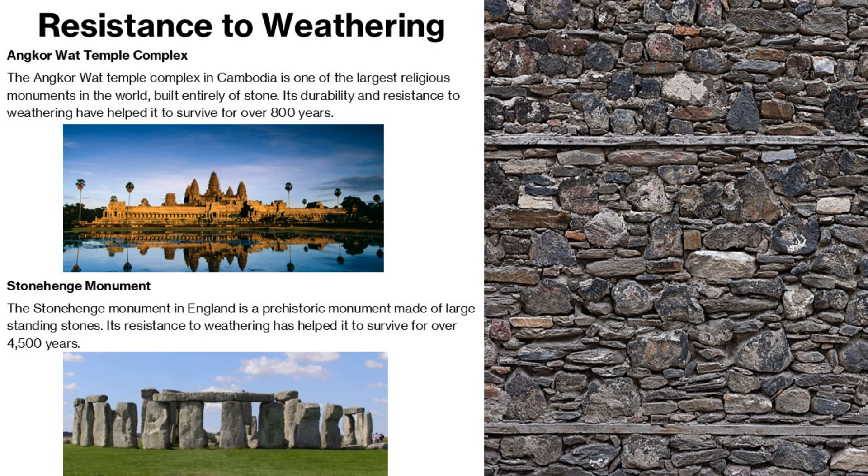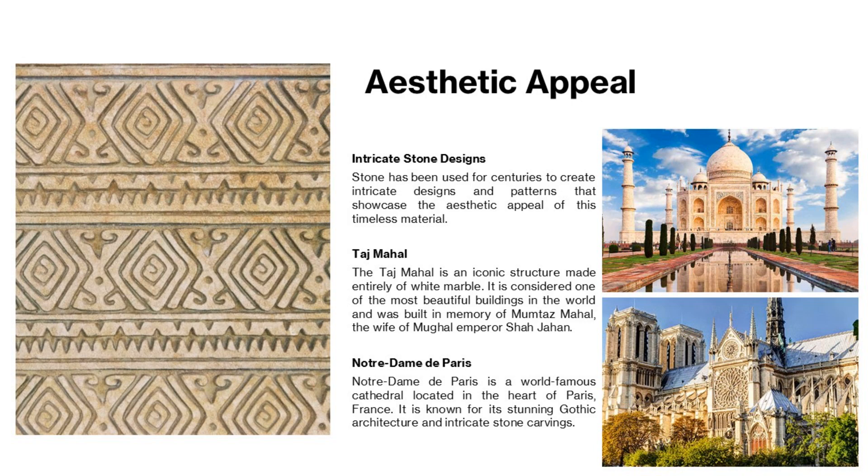Talking about resistance to weathering conditions, we have two iconic examples: the Angkor Wat Temple Complex and Stonehenge Monument. The Angkor Wat temple complex in Cambodia is one of the largest religious monuments in the world, built entirely of stone. Its durability and resistance to weathering have helped it survive for over 800 years. The Stonehenge Monument in England is a prehistoric monument made up of large standing stones which has survived for over 4,500 years.